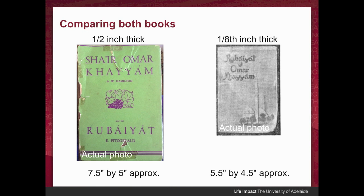When we compare Alf Boxall's book with the book found in the Hillman Minx, they're quite different. Alf's book is a thick hardback whereas the one found in the Minx is a very thin pocket book — basically like a pamphlet, not even a hard book. The Hillman book was one that could just slip into a jacket pocket, whereas the Alf Boxall book could not.